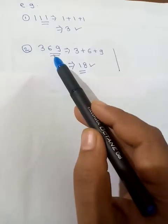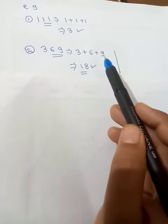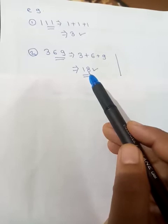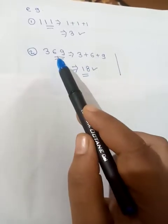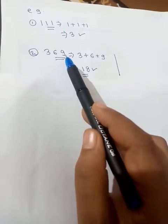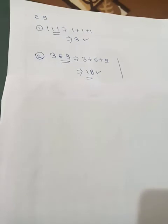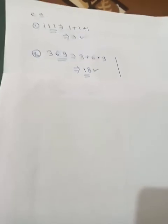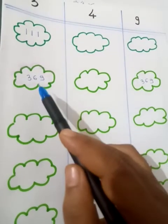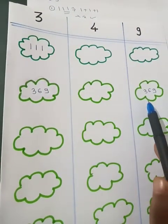The next number is 369. The sum of digits is 3 plus 6 plus 9, which equals 18. 18 is divisible by both 3 and 9. The number formed by the units and tens place is 69. 69 is not divisible by 4. So, 369 is divisible by 3 and 9, but not by 4.